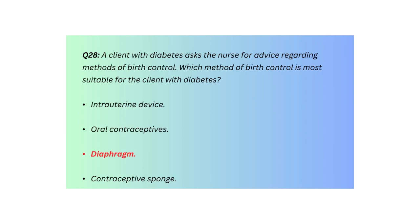Q28. A client with diabetes asks the nurse for advice regarding methods of birth control. Which method of birth control is most suitable for the client with diabetes? Intrauterine device, oral contraceptives, diaphragm, or contraceptive sponge.